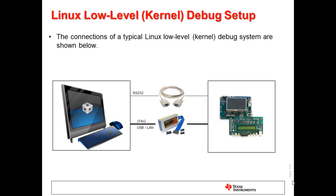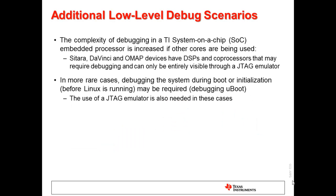Let's take a look at another simplified graphical representation of the Linux kernel debug environment, showing the typical connections. We have a host machine running a JTAG debug session on the left and a target running Linux on the right. A JTAG emulator is connected to the target to provide JTAG communication between the host and the target and provide target debug visibility. An optional serial connection between the host and the target is also shown. Other benefits include debug access to various coprocessors in the system, and the ability to debug boot and initialization code before the Linux kernel is actually running on the target.